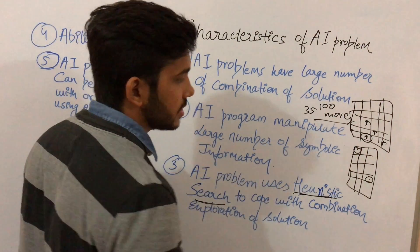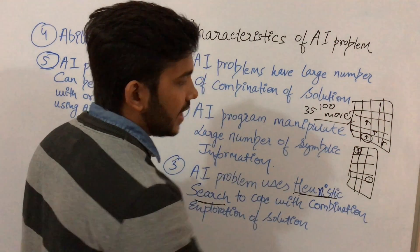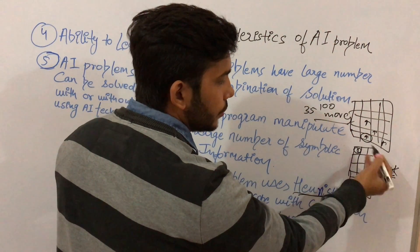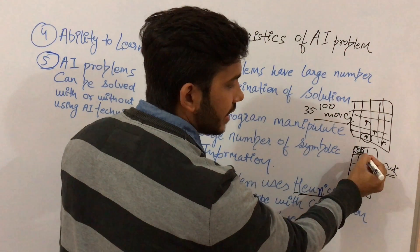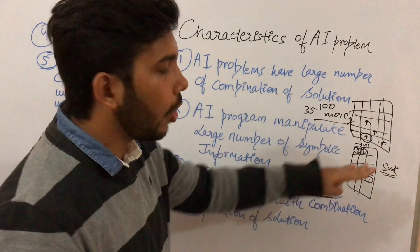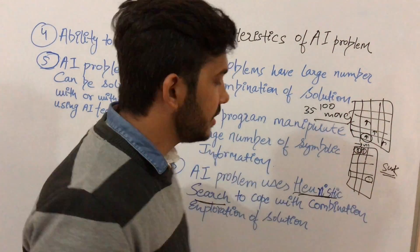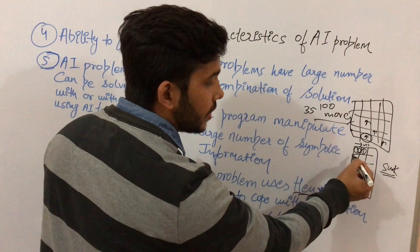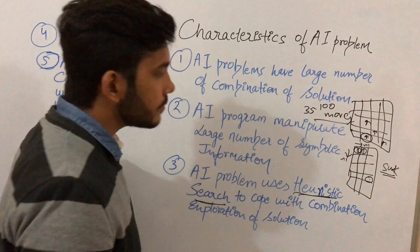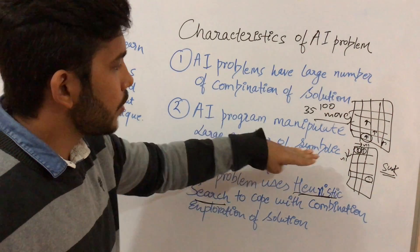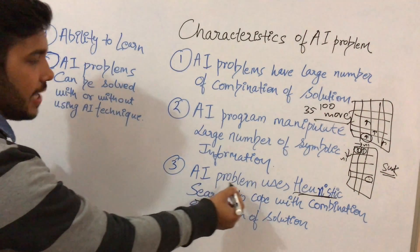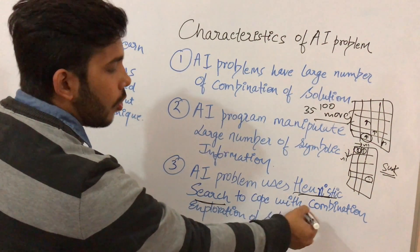The second characteristic is that AI problems manipulate a large number of symbolic information. For example, if you have placed one in a cell of Sudoku, you know you cannot place another one in that row. Moving in that direction means 'negation one' — you cannot place one in the complete row. This is the type of symbolic information AI problems manipulate.